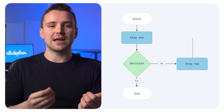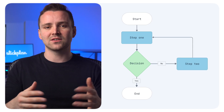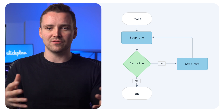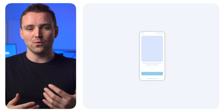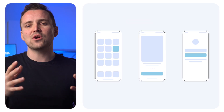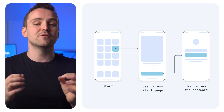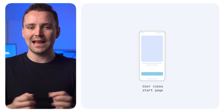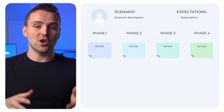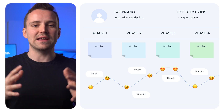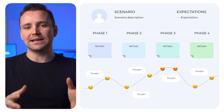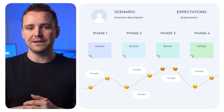What are the types of flows that you'll be working with? Task flow, which maps the steps a user takes to complete a specific task. Wire flow, which is a combo of user flowcharts and wireframes focused on basic page UI layouts. And customer journey map, a visualization of a customer's complete experience with your company.